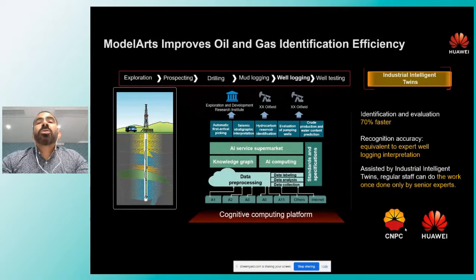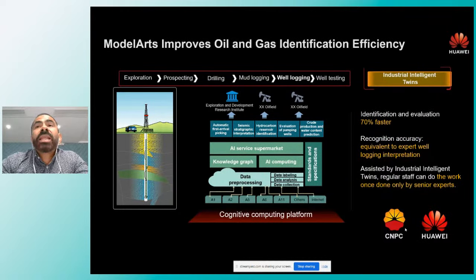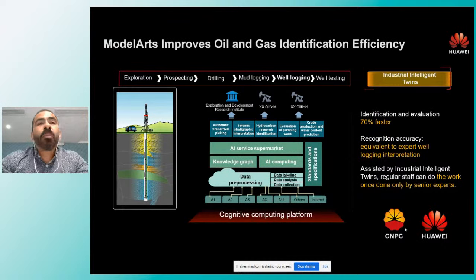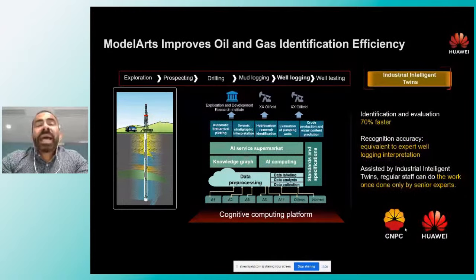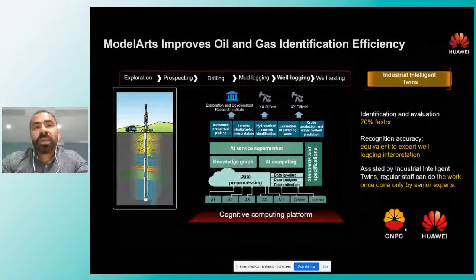Otro de los ejemplos es poder determinar si un pozo petrolero todavía es factible de ser explotado en cuanto a gas o producción de petróleo. Lo que se hizo fue desarrollar un Intelligent Twin —un dispositivo que va hacia el pozo— y a partir de un entrenamiento con un modelo de inteligencia artificial se pudo determinar si ese pozo petrolero todavía era factible de seguir siendo explotado. La identificación y evaluación es hasta 70% más rápida, equivalente a bajar a un experto humano hacia esas profundidades.